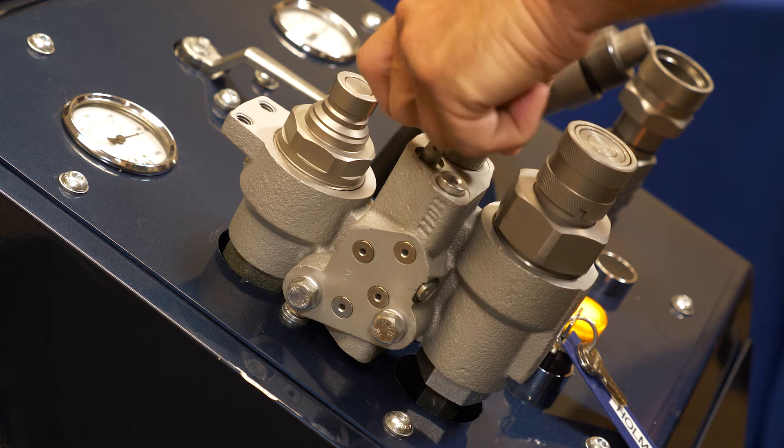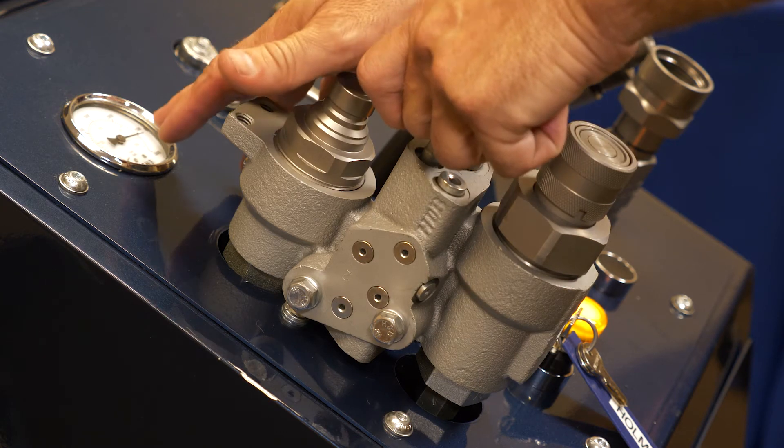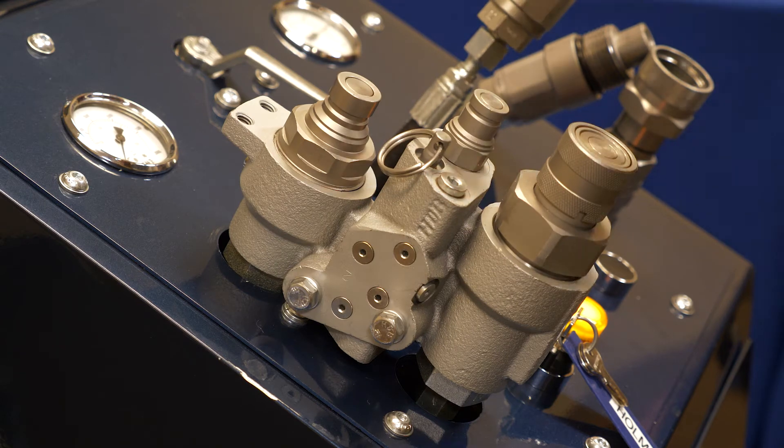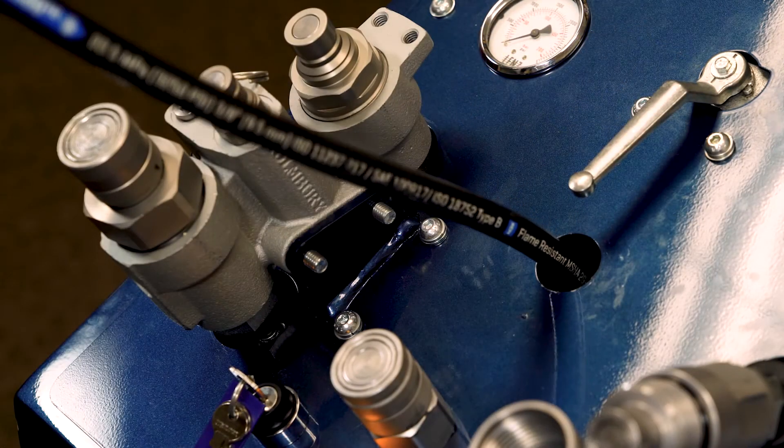As we pull that pin, we see our gauge go from 2,600 to zero, taking all the pressure off the skid loader side. We still have about 2,600 pounds of trap pressure on our line for our male flat face.